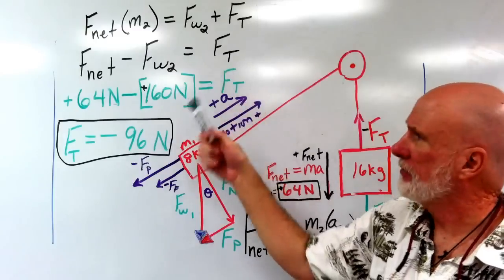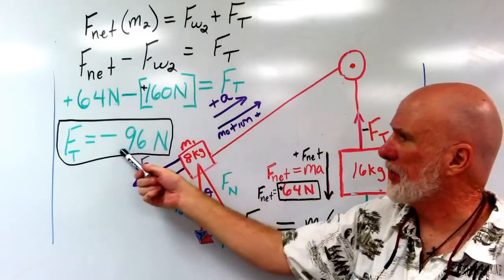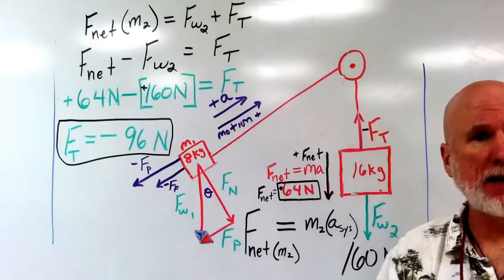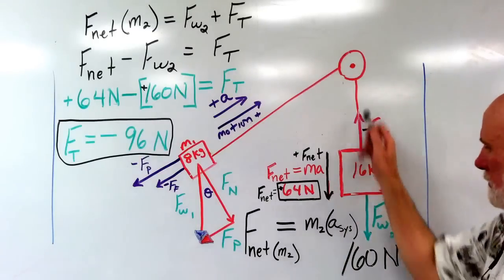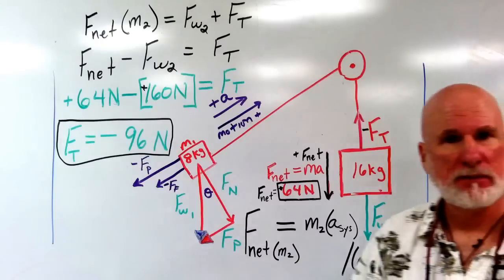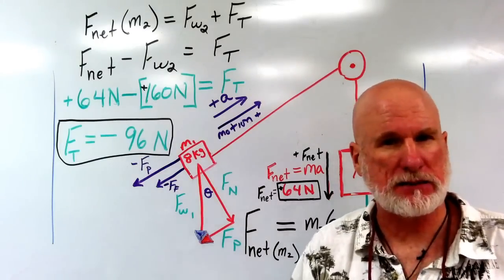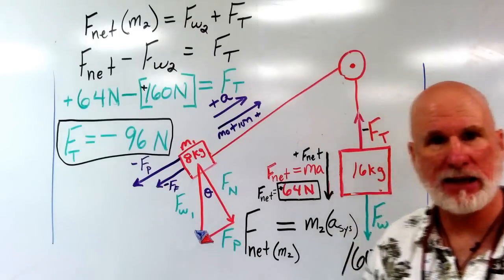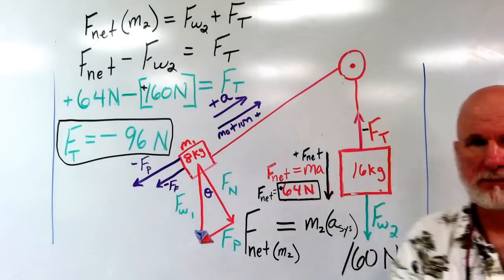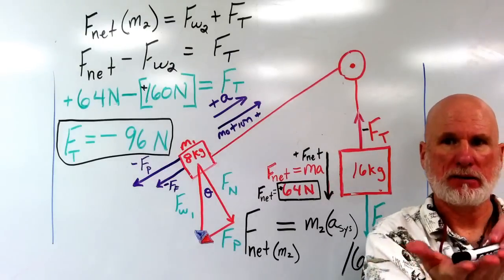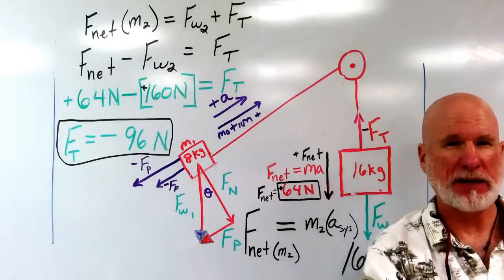So I solve for Ft and come up with negative 96 newtons. That's going to be my tension. It's not going to be 160 newtons, it's going to be 96 newtons, a lot less. Because this is accelerating down, the tension is going to be less.